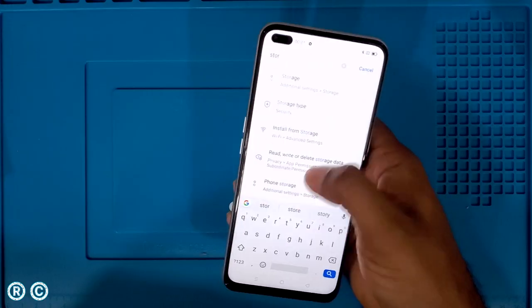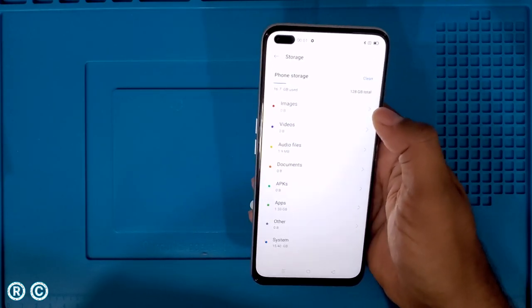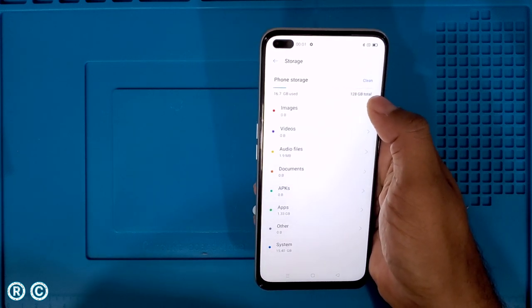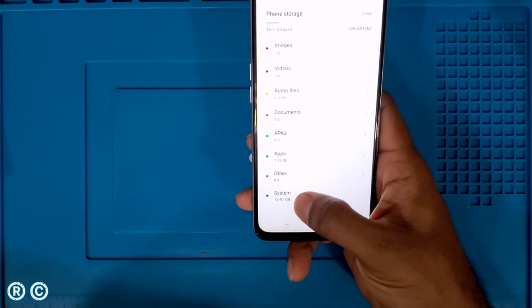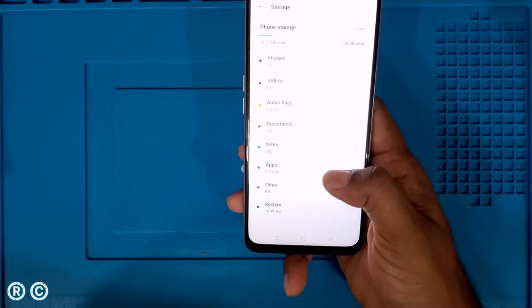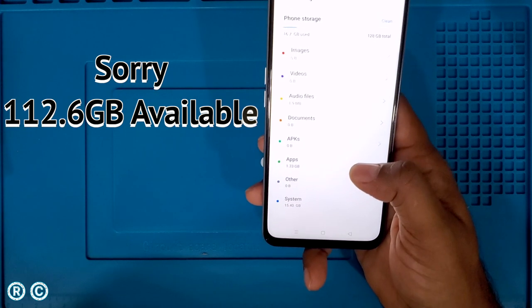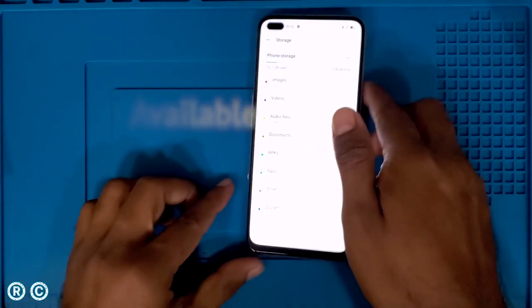Going to settings and checking phone storage - we have 128GB total storage. Out of that, 15.4GB is consumed by the system, leaving almost 114.6GB remaining for use.